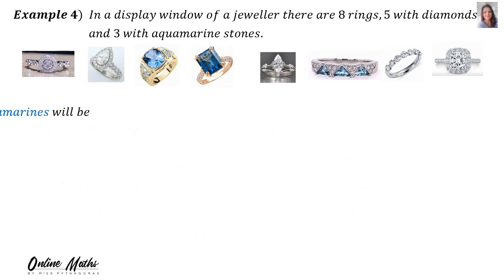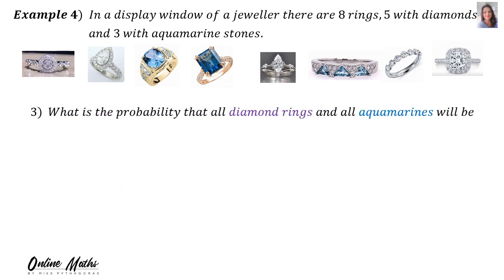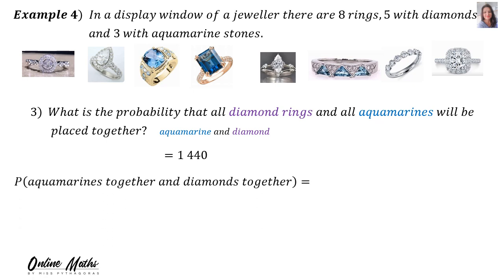The third question says: what is the probability that all diamond rings and all aquamarines will be placed together? From the previous slide, there were 1,440 ways. Therefore, the probability that aquamarines and diamonds are together is 1,440 divided by the total of 40,320. When we simplify that, the probability is 3.57%.